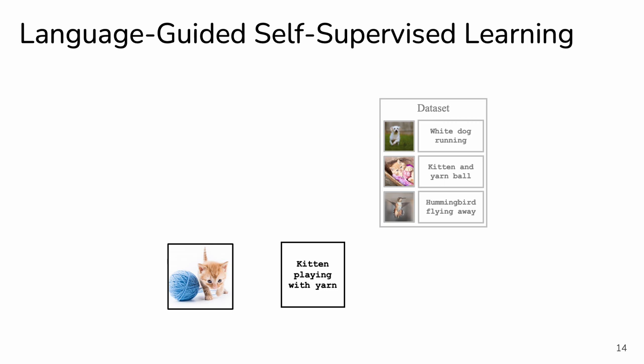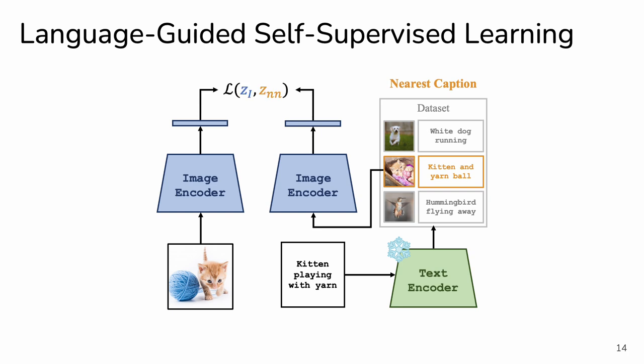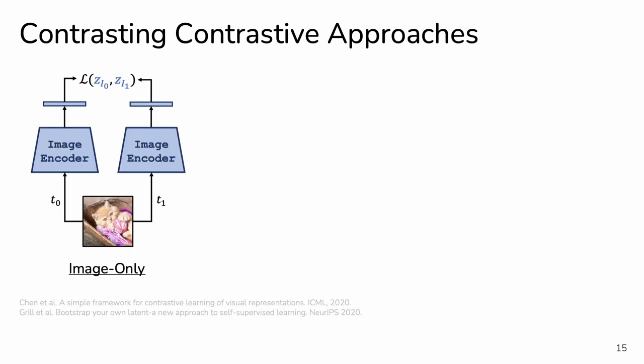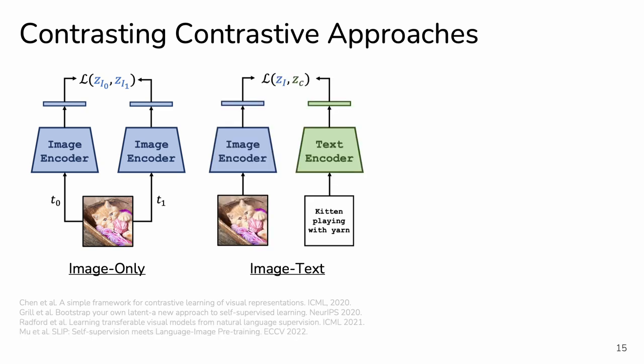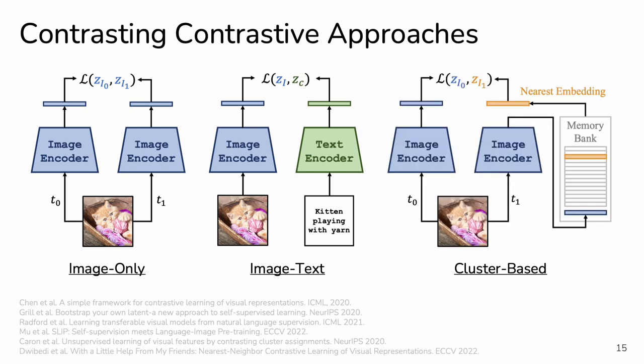Now let's consider our approach. Given a dataset of captioned images, we first use a frozen text encoder to find nearest captions, which can be done very efficiently offline. We then use the image pair for image-based contrastive learning. We contrast our approach with different contrastive approaches: image-based approaches contrast embeddings for augmented versions of the same image; language-based approaches contrast image and text embeddings in a joint embedding space; and cluster-based approaches contrast the image embedding with a retrieved embedding.